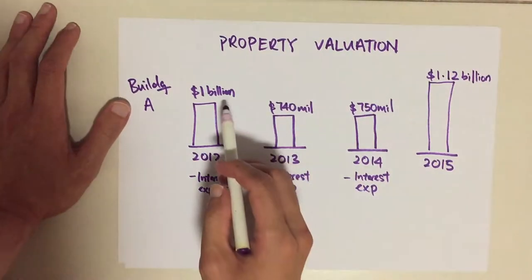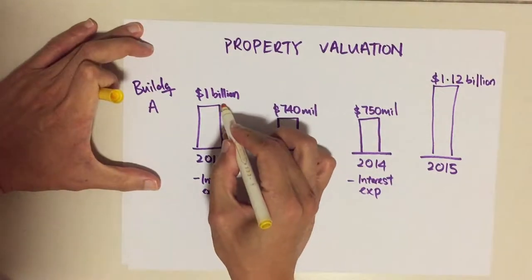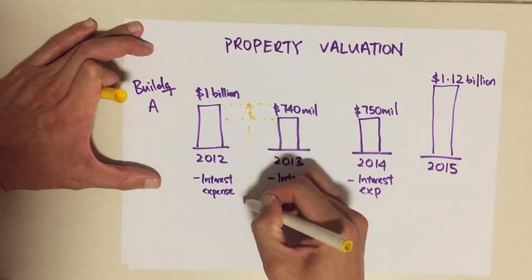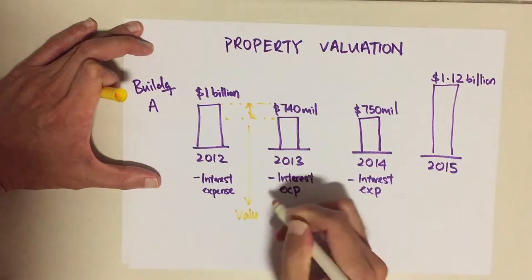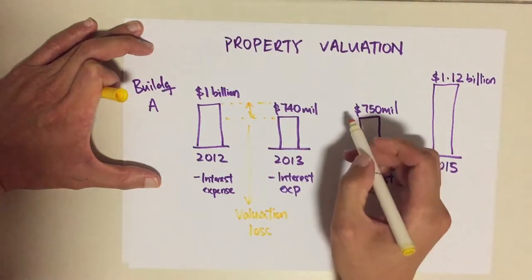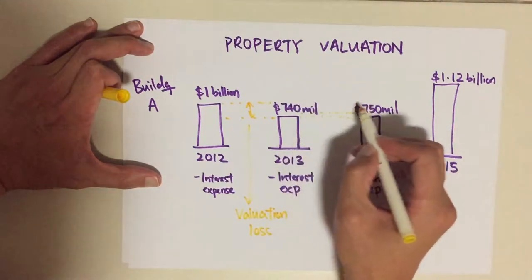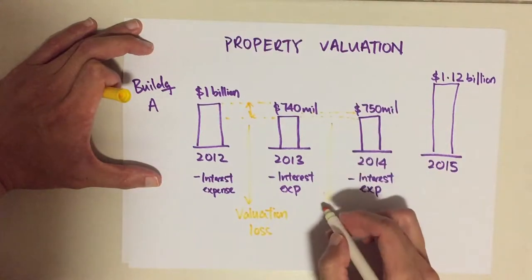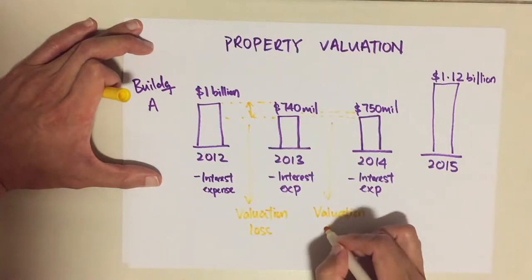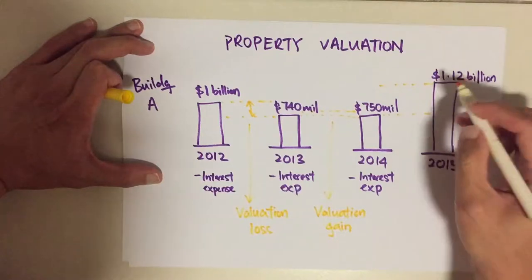Wow, so the gap here is often what we see as a valuation loss. Here was a tiny valuation gain, because it increased from 740 to 750 million — that's a valuation gain. And from here to here, it's a huge increase.